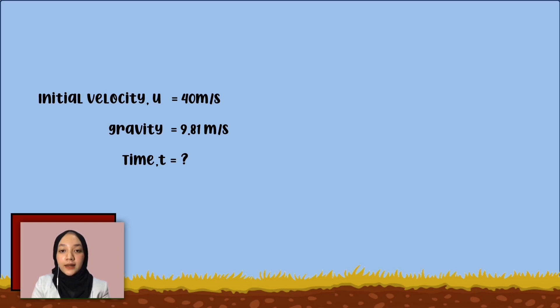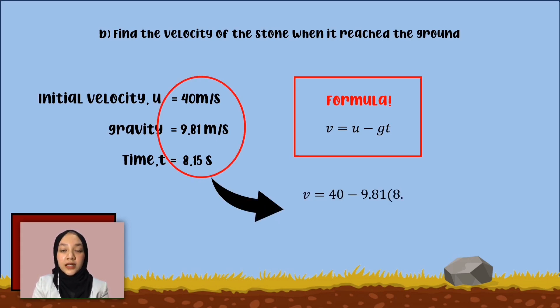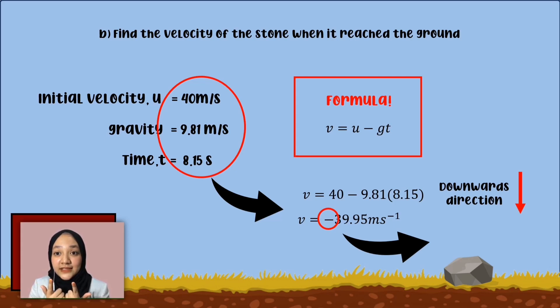Next question B: find the velocity of the stone when it reaches the ground. Since we have the time for the stone to reach the ground, we just need to apply the formula given. Final velocity as we know, V, equals the initial velocity minus gravity multiplied with the time. Then substitute all the values that we have obtained. So the final velocity is negative 39.65 meters per second. The negative sign indicates that the stone is in the downwards direction.